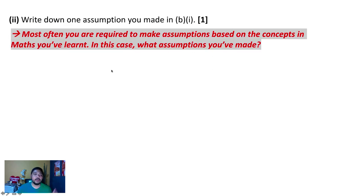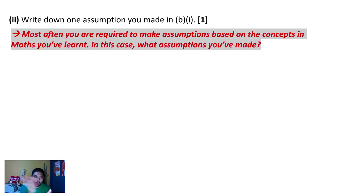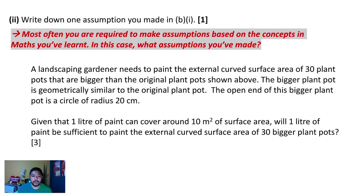Typically this kind of question will ask you to write down the assumptions made. You have to ask yourself what assumptions you made. For example, when we paint pots, do we do one coating or two coatings? If two or three coatings were needed, you would need more paint. The assumption made here is that one coating of paint is sufficient.